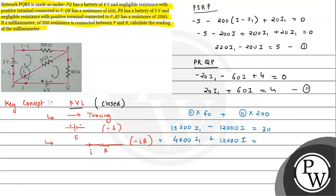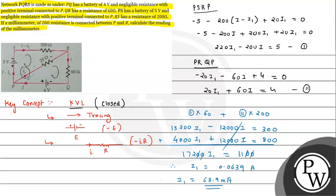Adding the two equations, the 12,000 I terms cancel out. We get 17,200 I1 equals 1100. Simplifying, I1 equals 11 upon 172, which is approximately 0.0639 ampere. Since the milliammeter reading is in milliampere, we multiply by 10 raised to 3, giving us approximately 63.9 milliampere. This is the answer for the question.